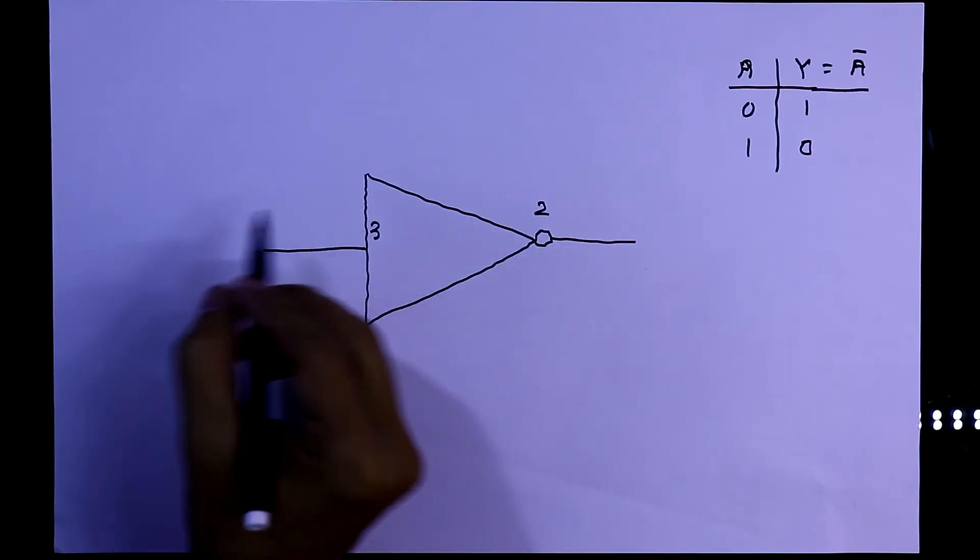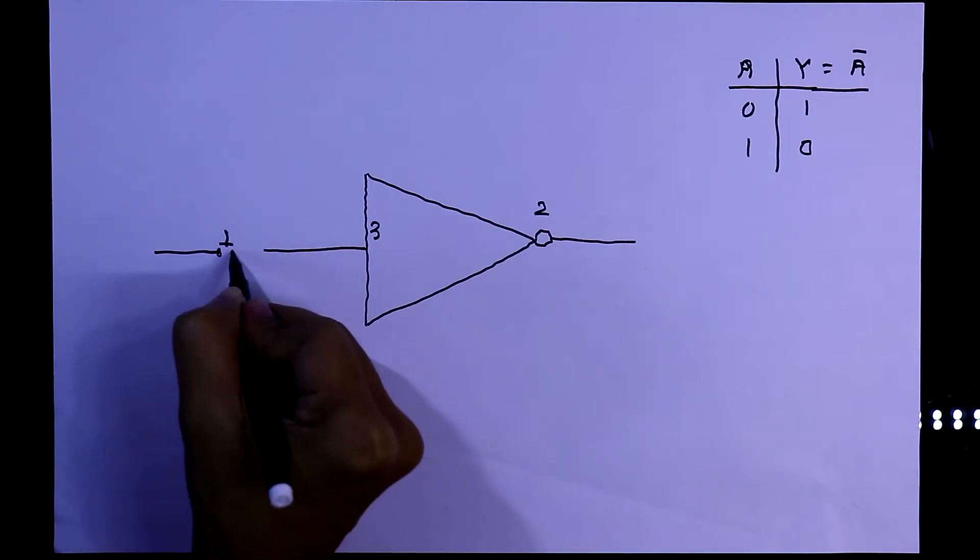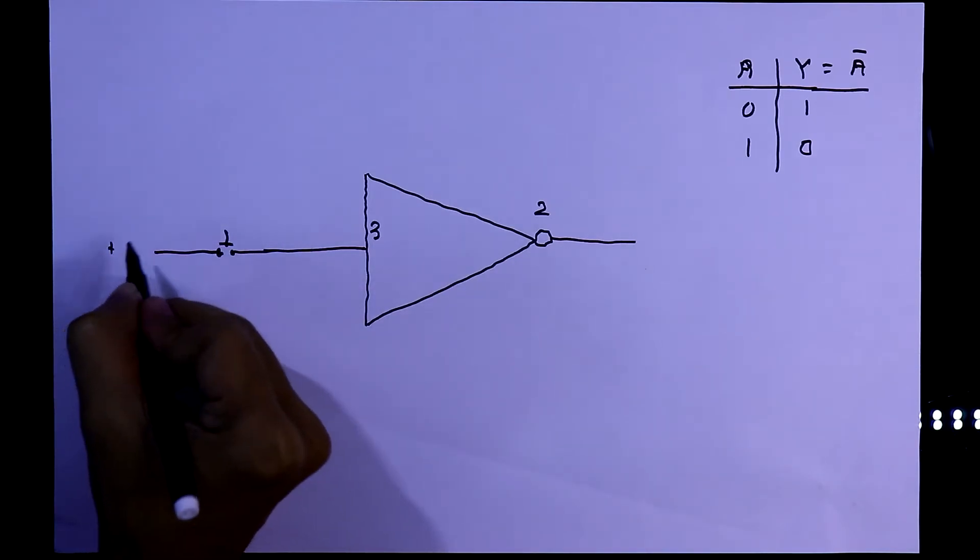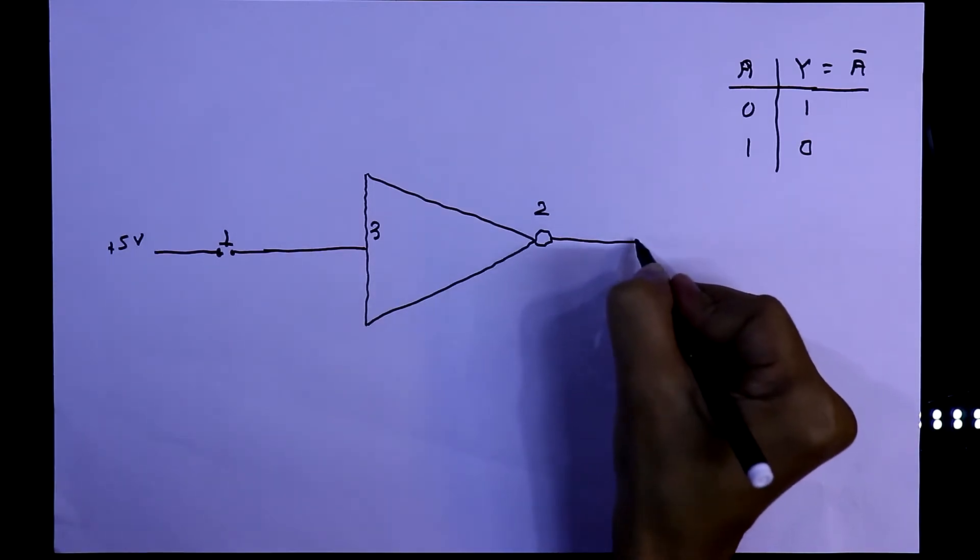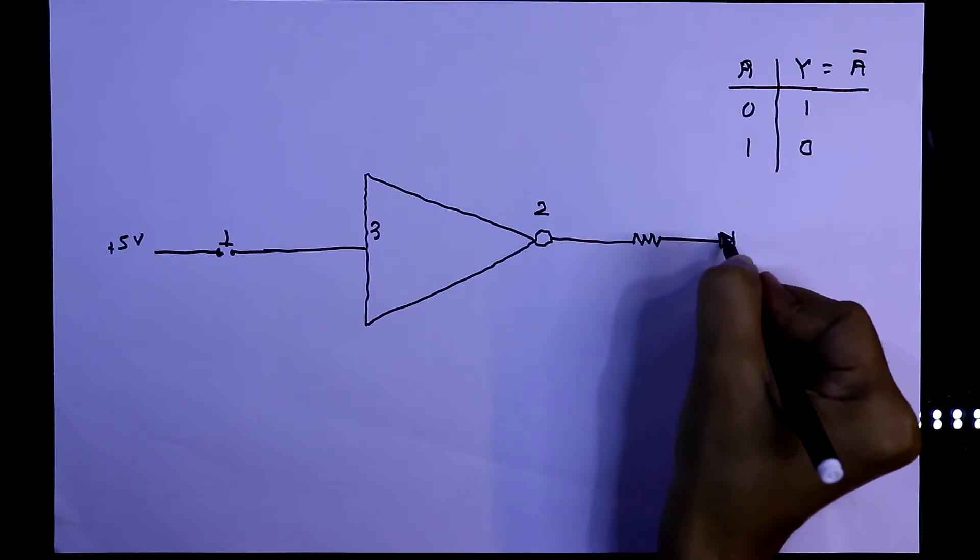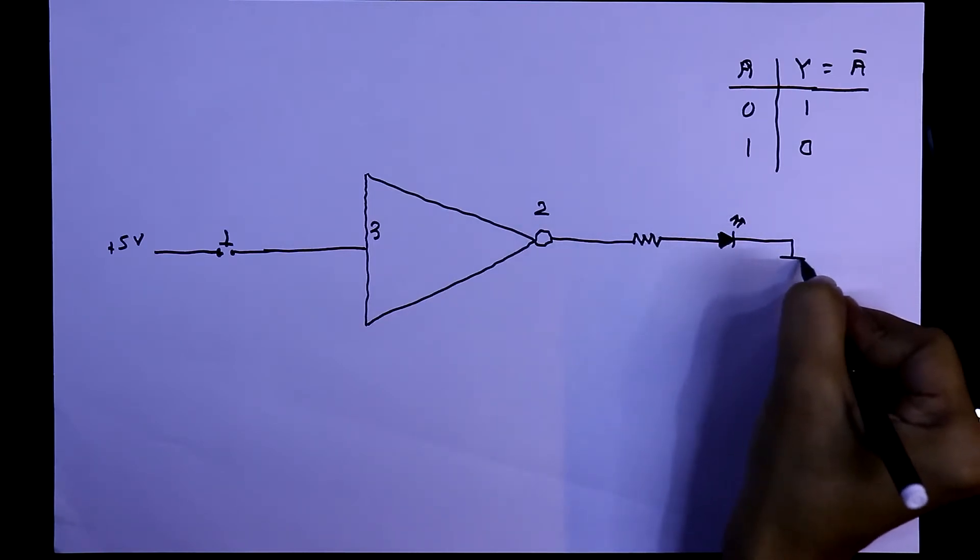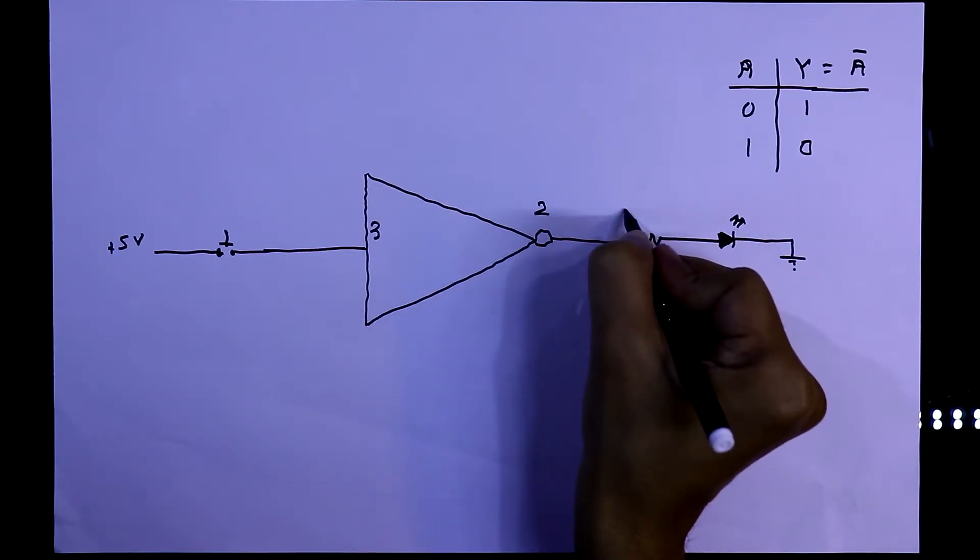To provide input to pin number 3, we will use a push button switch or any kind of push-pull input switch. In the other side of the switch, we will provide signal high. And to see the output, we will use a resistor and an LED. The negative pin of the LED will be connected to the ground. The value of the resistor will be 220 ohms.